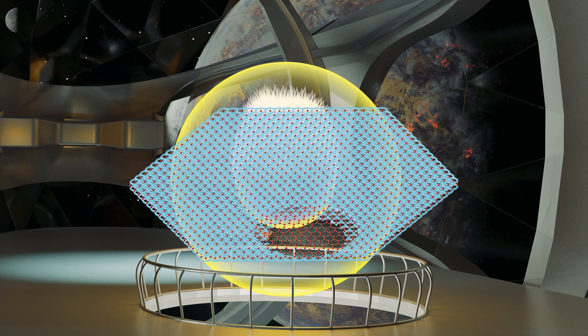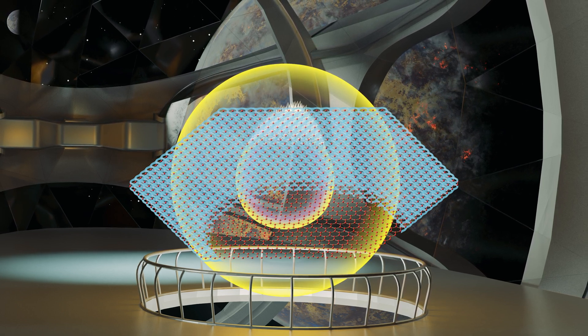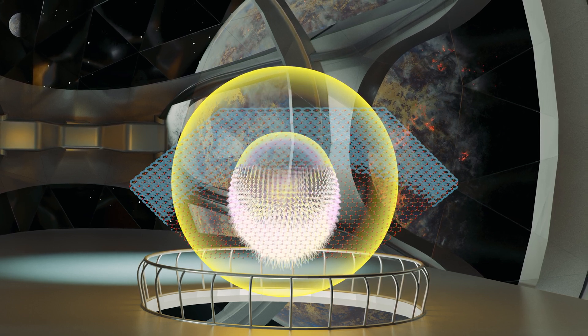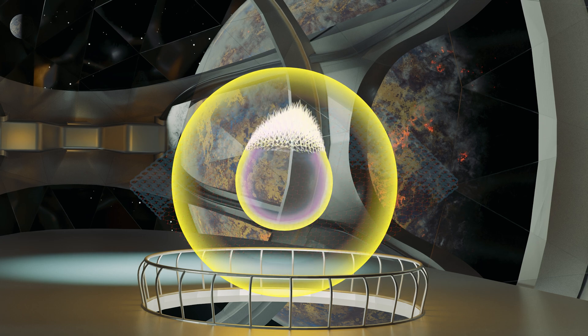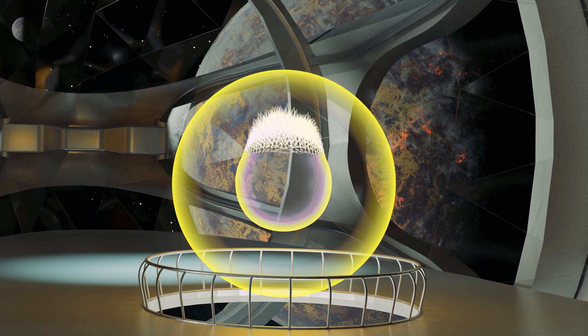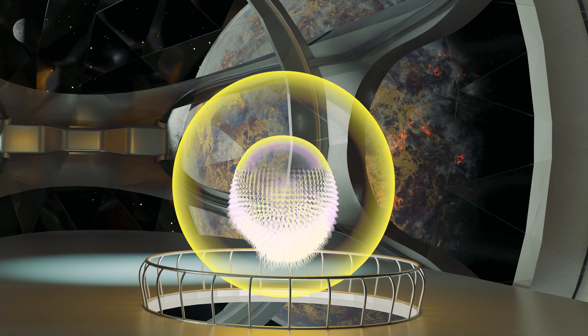Graphene is impenetrable to all elements, even helium. It absorbs only 2% of light, making it ideal in applications requiring transparent materials. While those are useful properties, the most important to 21st century science remains the superconducting behavior.